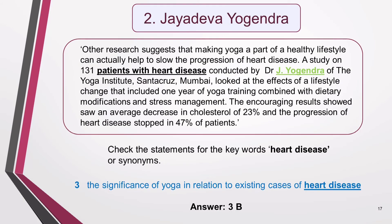The next name on the list is Jayadeva Yogendra, found in the last paragraph. Reading around the name, I note that this researcher studied patients with heart disease. I check the statements for these keywords and find them in statement 3: the significance of yoga in relation to existing cases of heart disease. I read the statement carefully, then go back to the text to verify all the information matches. I also do a quick scan of the text around the other unmatched names to check that heart disease doesn't appear again. It doesn't, so I'm confident the answer is 3B.